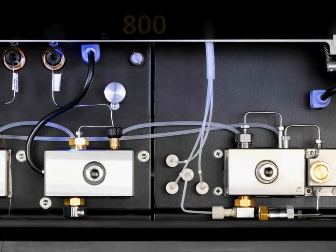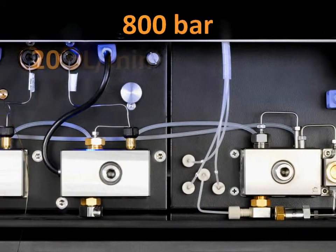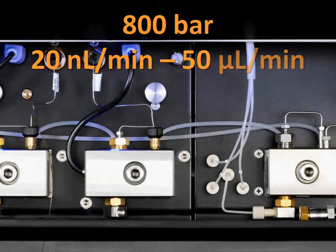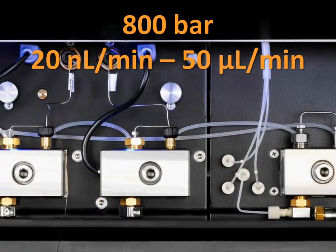The RSLC nano can run at pressures as high as 800 bar across flows from only 20 nanoliters per minute up to 50 microliters per minute.